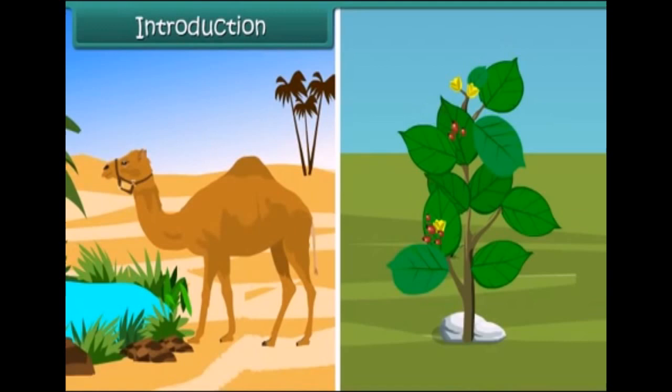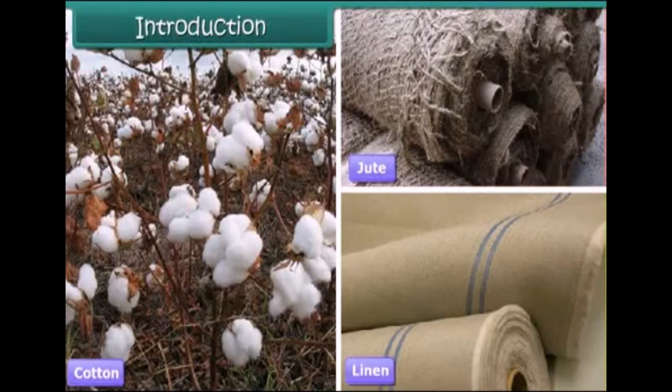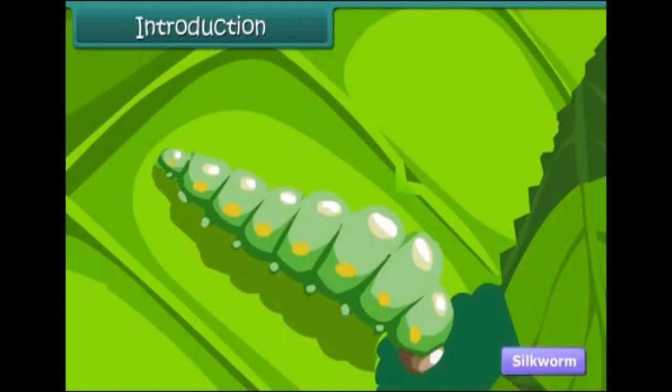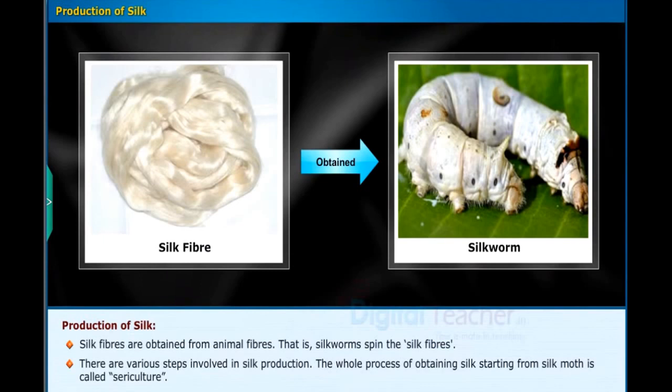Fibers can be obtained from both plants and animals. Some familiar plant sources of fiber are cotton, jute, and linen. Some well-known animal sources of fiber are sheep, goat, camel, alpaca, and llama. If we treat insects as different from animals, the silkworm can be classified as an insect source of fiber. Silk fibers are obtained from silkworms, which spin the silk fibers. The whole process of obtaining silk starting from the silk moth is called sericulture.